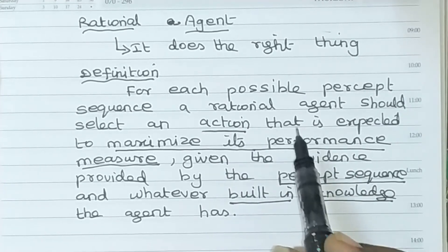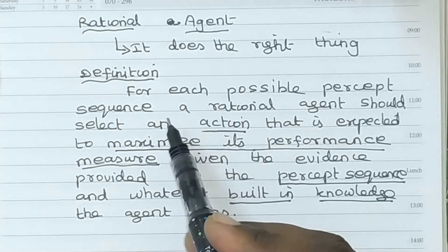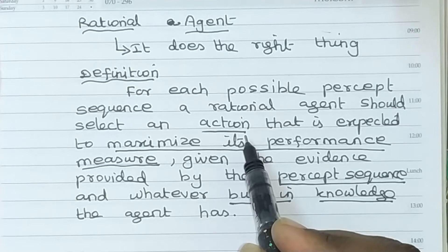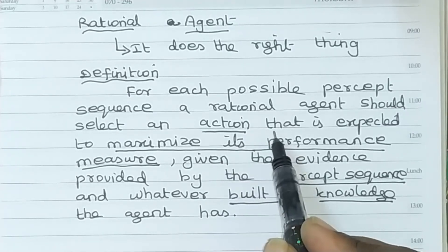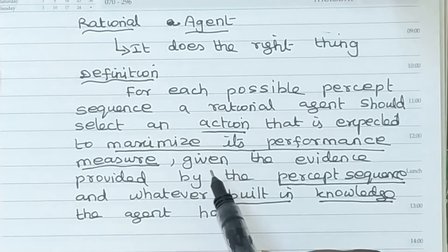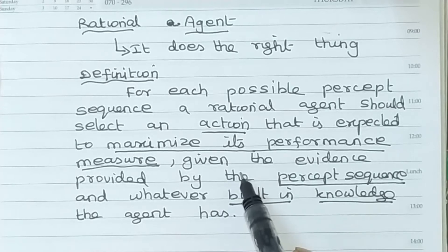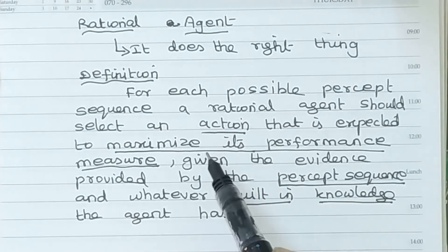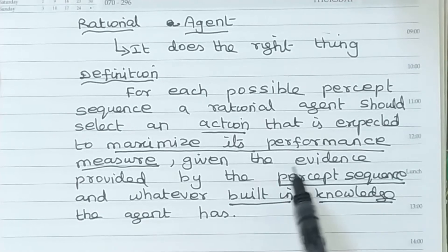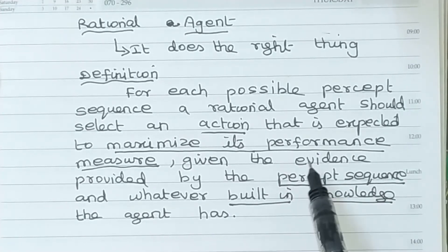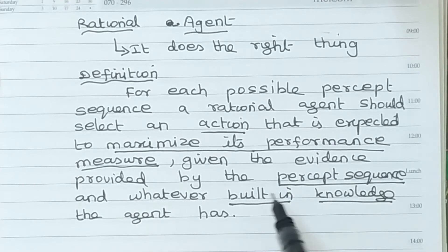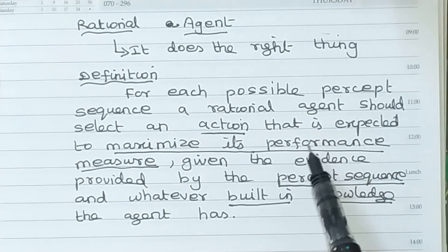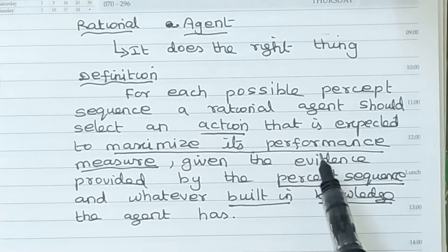If you want to make a rational agent, given the possible percept sequence, the rational agent will select one action, and that action will maximize the performance measure. The agent will perceive the percept sequence from the environment, and it has to select the action. The action must maximize its performance measure.